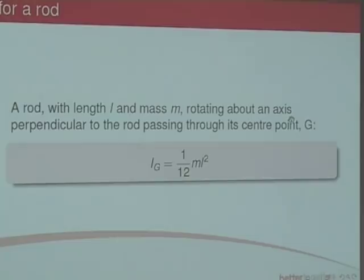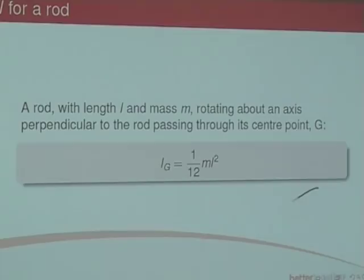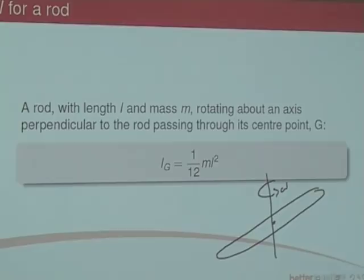For a rod of length L and mass M, spinning about an axis through its centre, the moment of inertia is 1/12 ML².